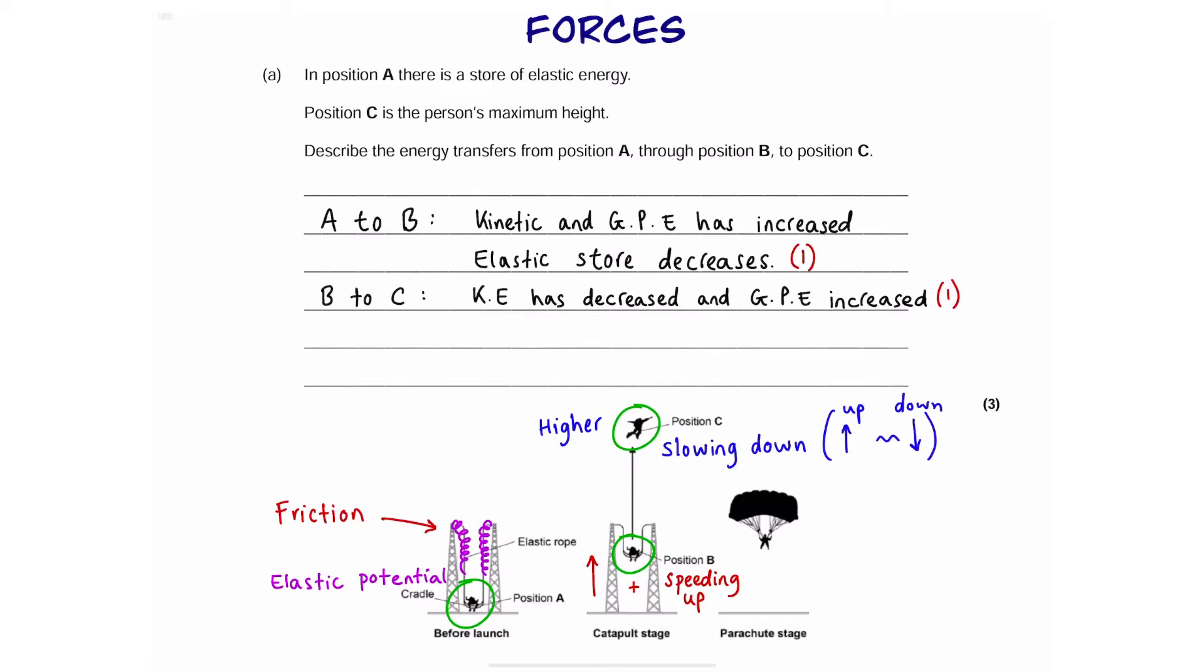We know that when things are moving, that means friction causes energy to be released in the form of heat. So, that means our third mark is going to be some energy is dissipated to the surroundings. Another word for dissipated is released or spread to the surroundings. And that's going to be our third mark.